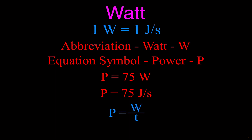When we calculate power, we take the amount of work done — this W is for work, not Watts — divided by the amount of time it takes to do that work. That's how we calculate power: work divided by time.